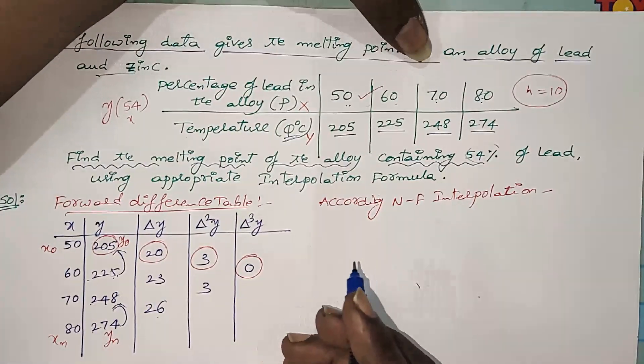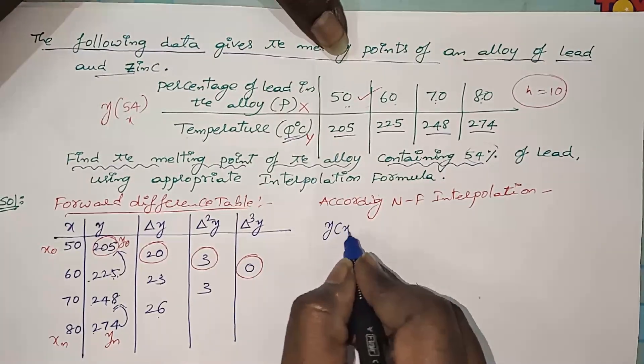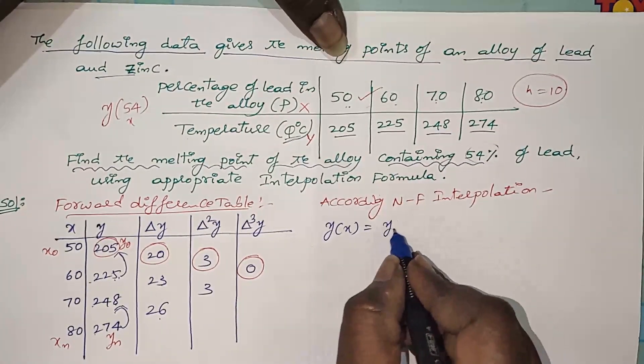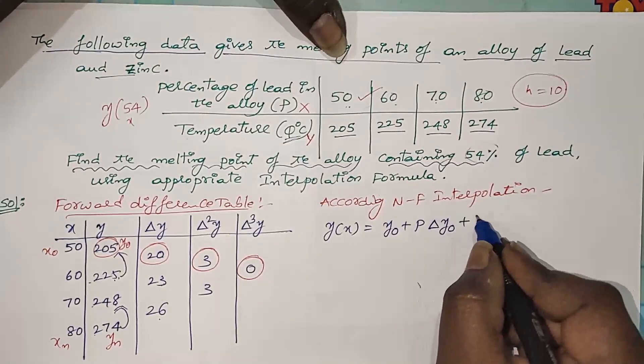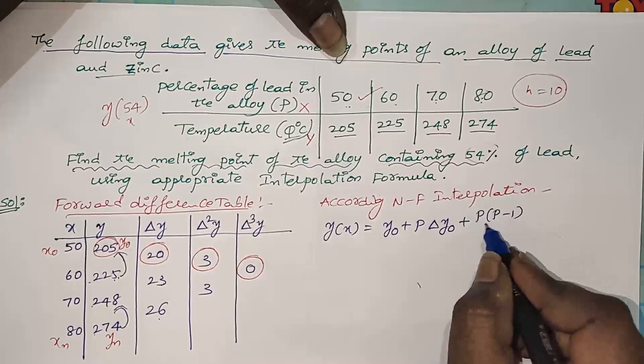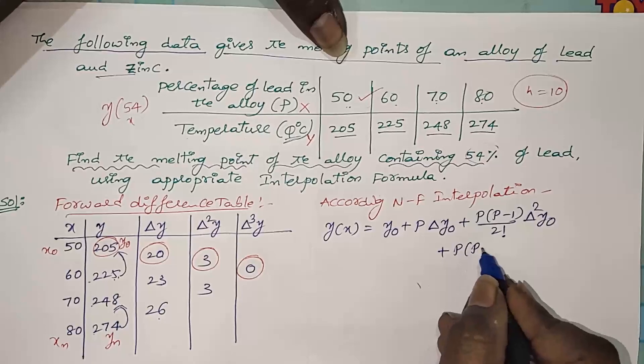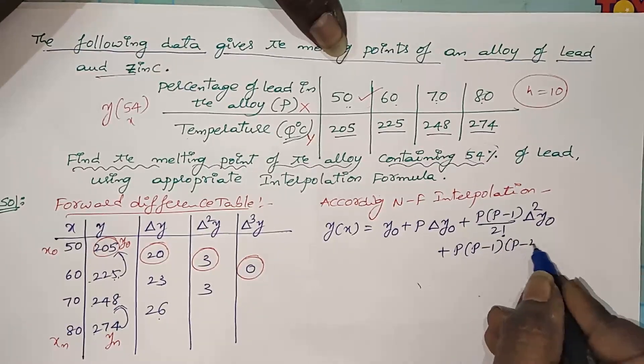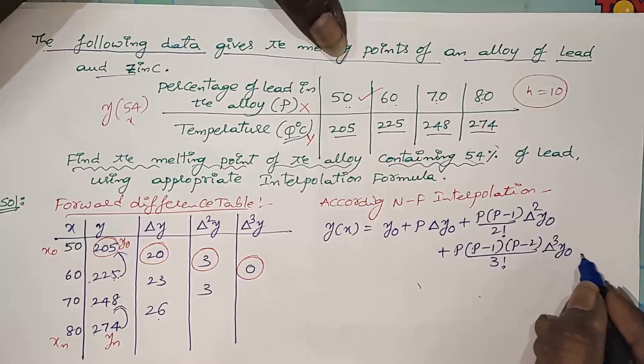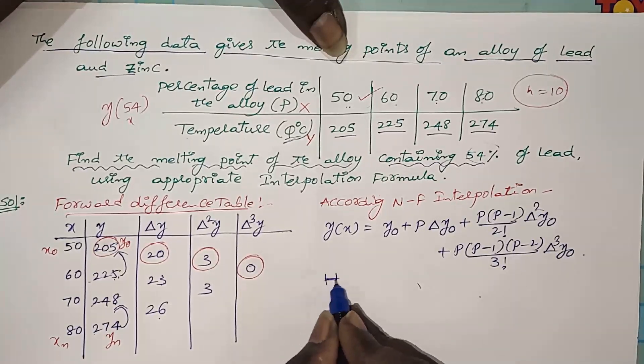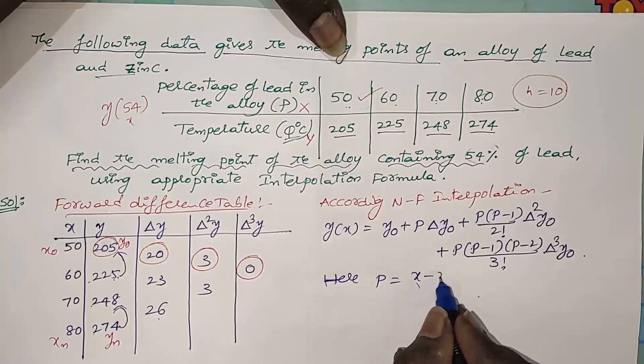Y of X = Y naught plus P times delta Y naught plus P times (P minus 1) by 2 factorial times delta square Y naught plus P times (P minus 1) times (P minus 2) by 3 factorial times delta cube Y naught. Here P is X minus X naught by H.